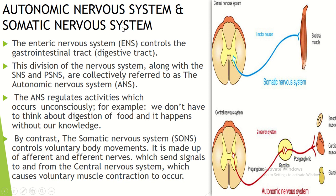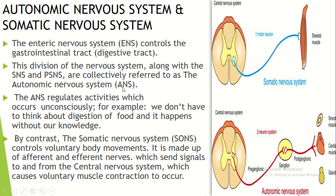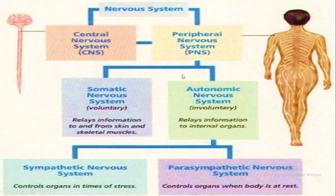This is Autonomic and Somatic: Autonomic is automatic — it works automatically and without our conscious knowledge. Somatic is voluntary — controlled by the Somatic Nervous System. It is further divided into Parasympathetic and Sympathetic Nervous Systems.